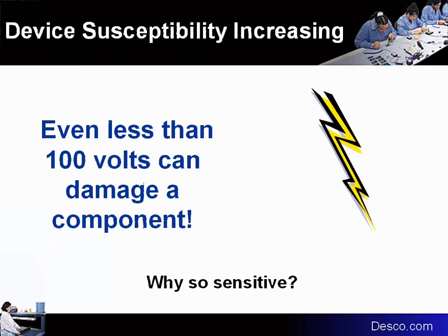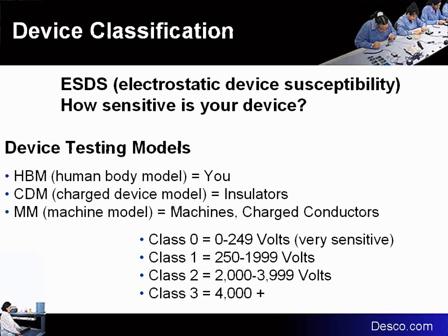In today's electronics, even less than 100 volts can damage a component. We have some that are now as low as 10 static volts sensitivity. As devices have gotten smaller and smaller, the gates and spacing dimensions have been reduced, and the voltage to operate the components has also been reduced to make smaller power supplies to drive the devices.